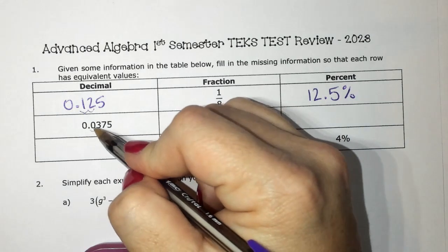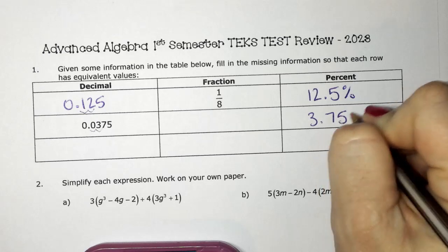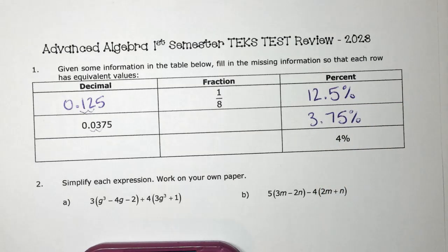To turn this into a percent, we move it twice and it's 3.75%.